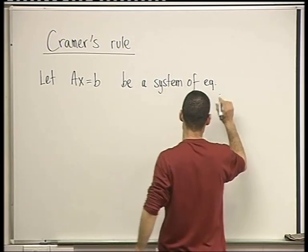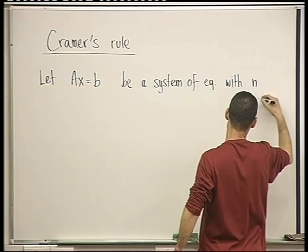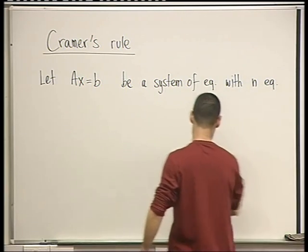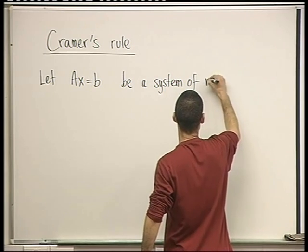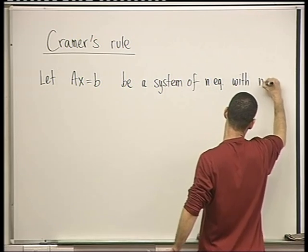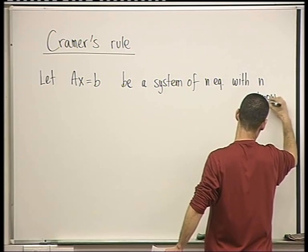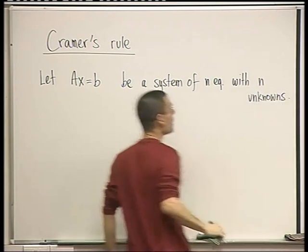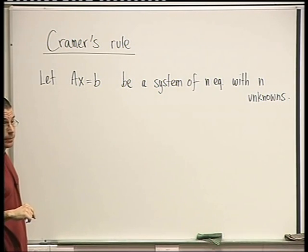A system of n equations with n unknowns, or variables, unknowns. So that means that A is an n by n matrix.